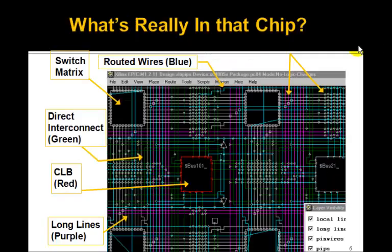Here's what's really inside the chip. These are the CLBs, and these are the switch matrices. The outputs just get wired into other CLBs — so this output can go to the next one.